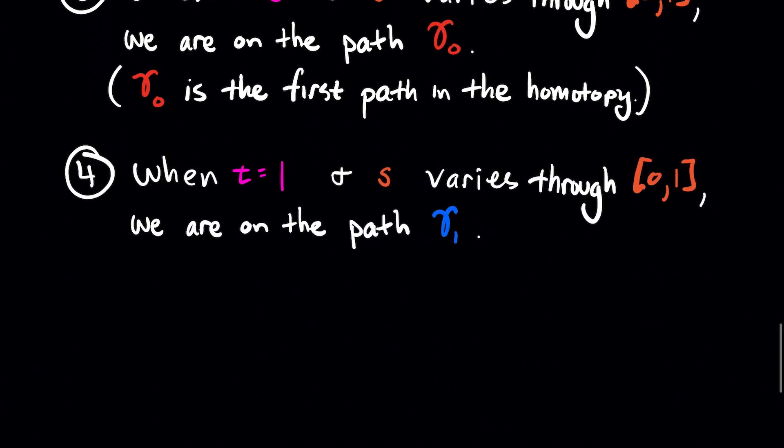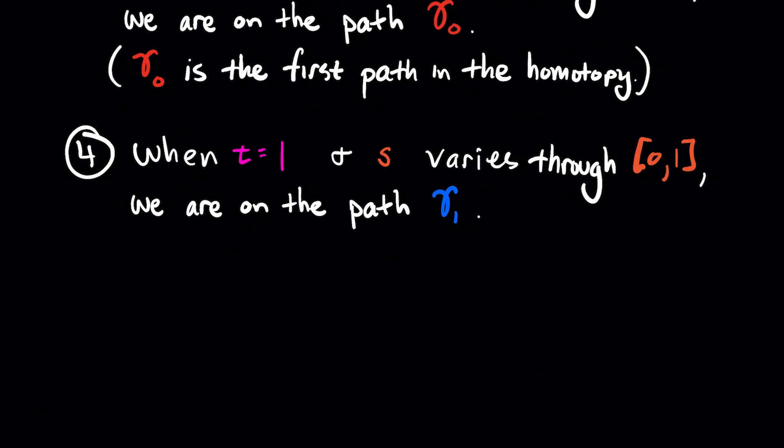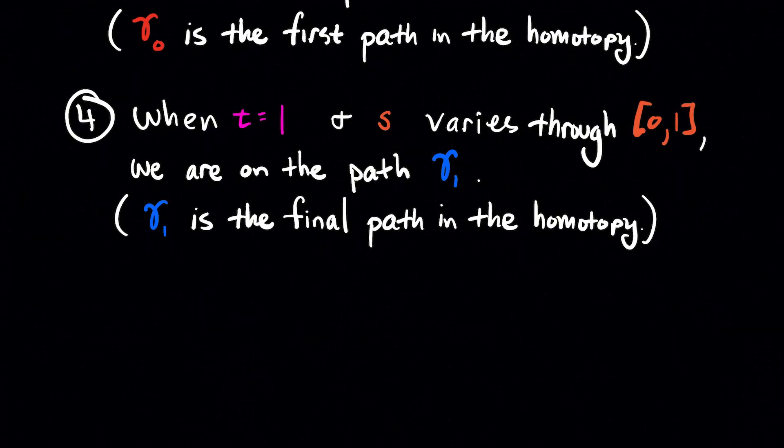Number 4: When T equals 1 and S varies through the interval from 0 to 1, we are on the path gamma 1. So gamma 1 is the final path in the homotopy.